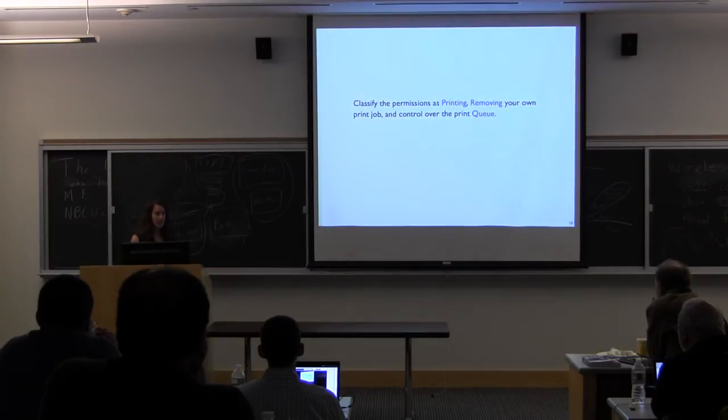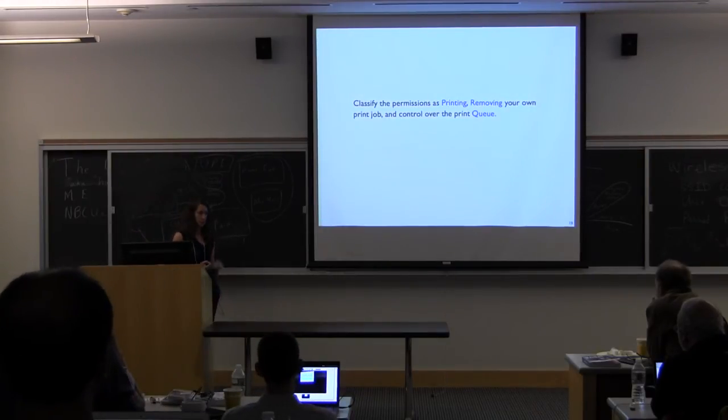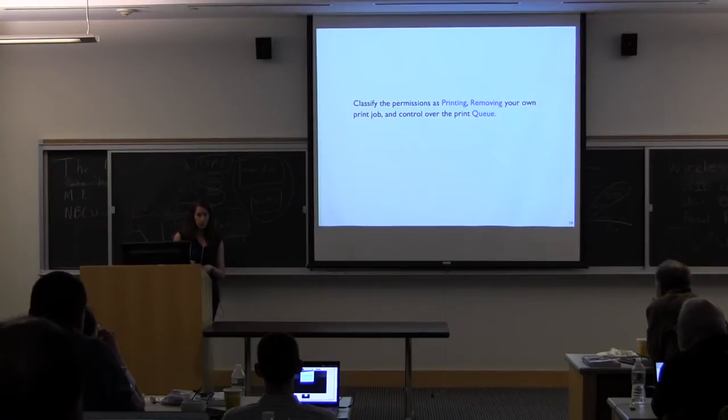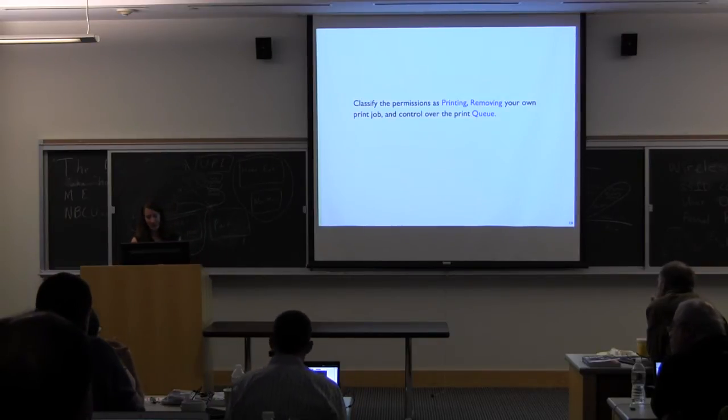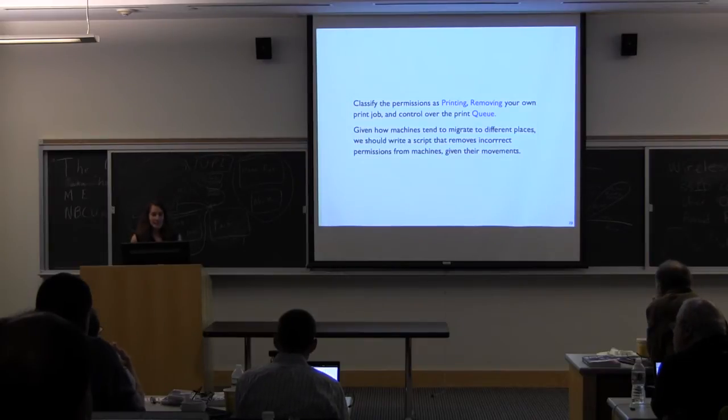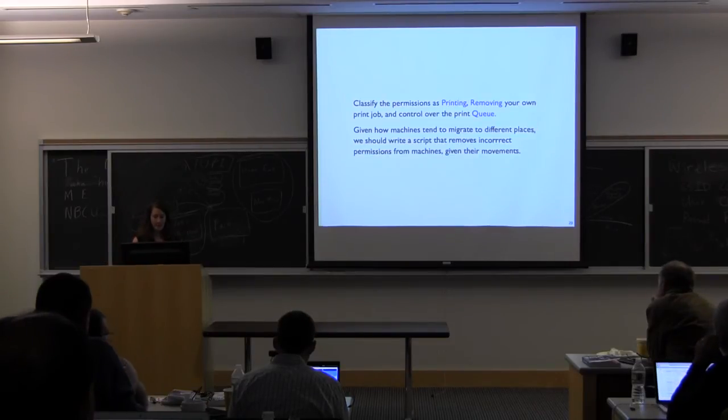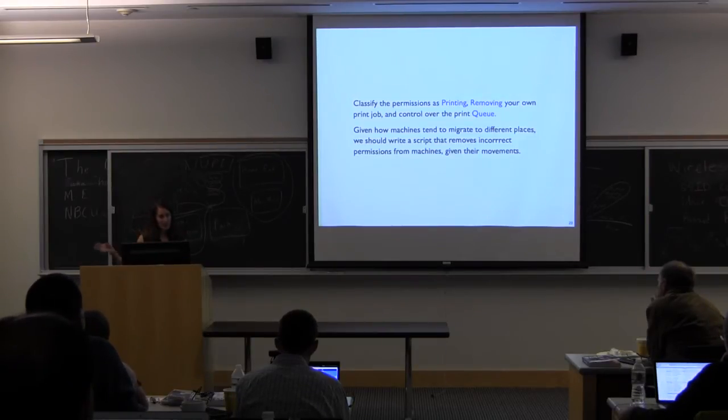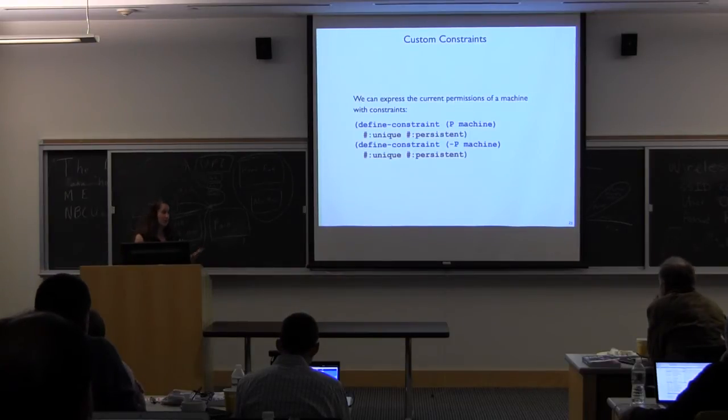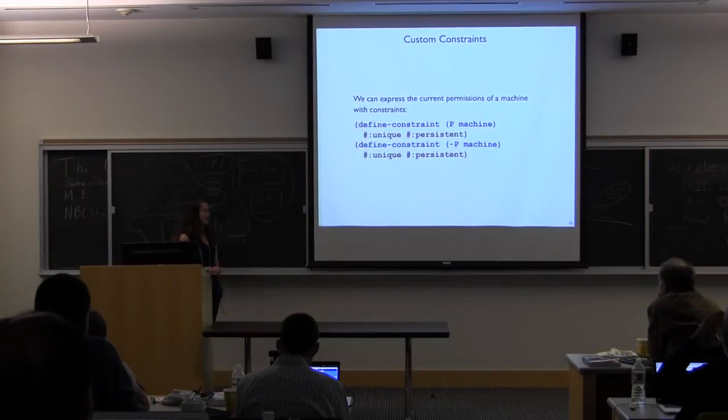So we want to classify the permissions of these computers as being able to print, being able to remove your own print jobs, and being able to control all of the print jobs on the print queue. So given that sometimes a machine moves from one place to a different place, we need to write some script or something like that that ensures that when we move a machine from a higher permission location to a lower permission location that the correct permissions are removed.